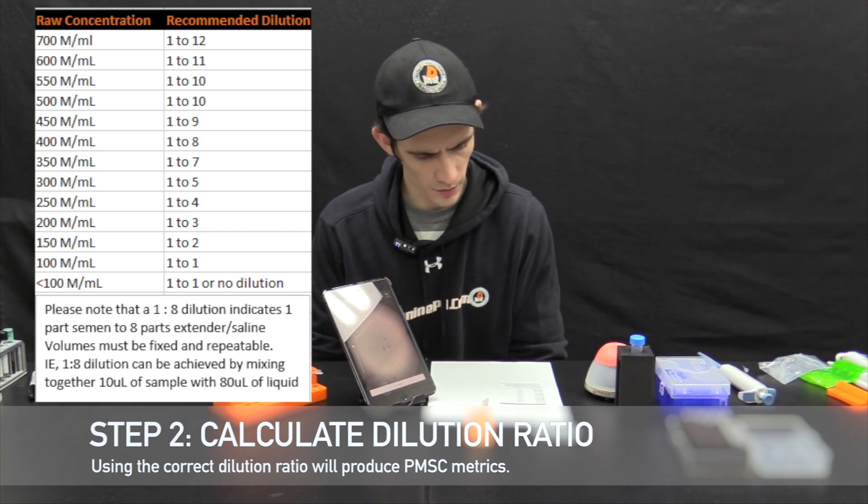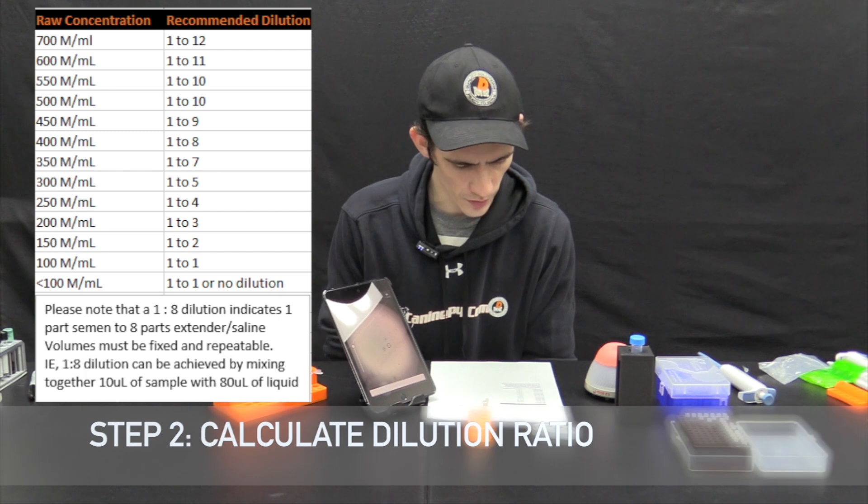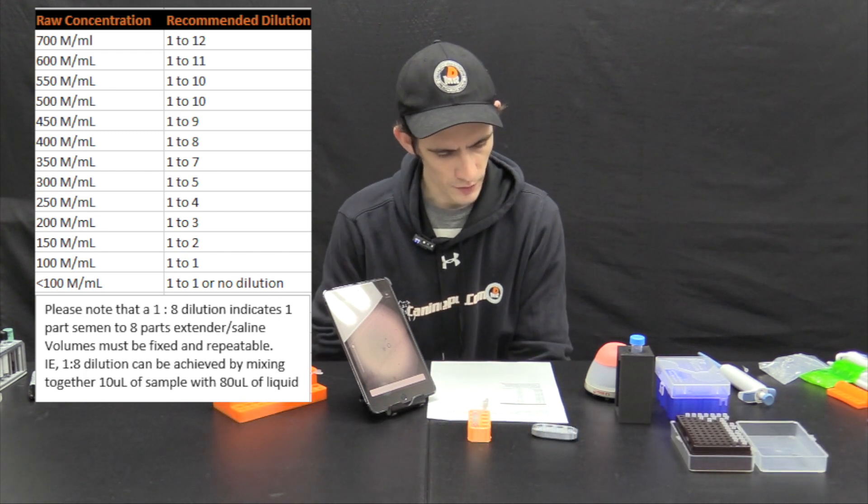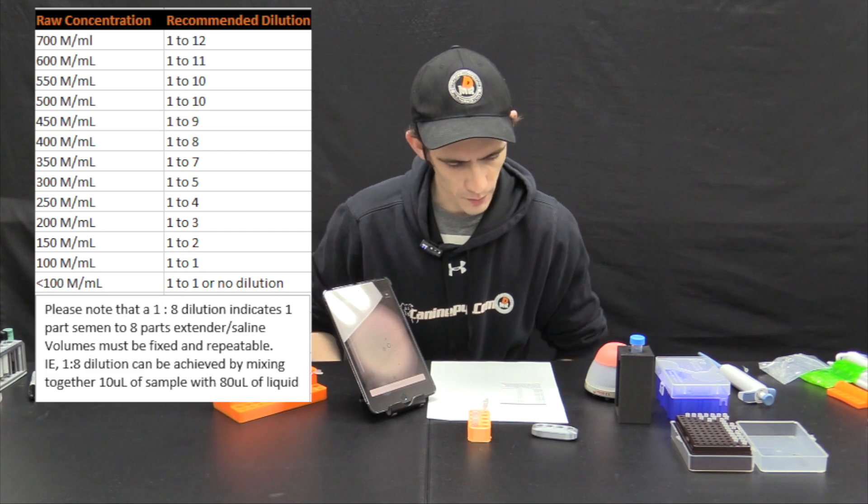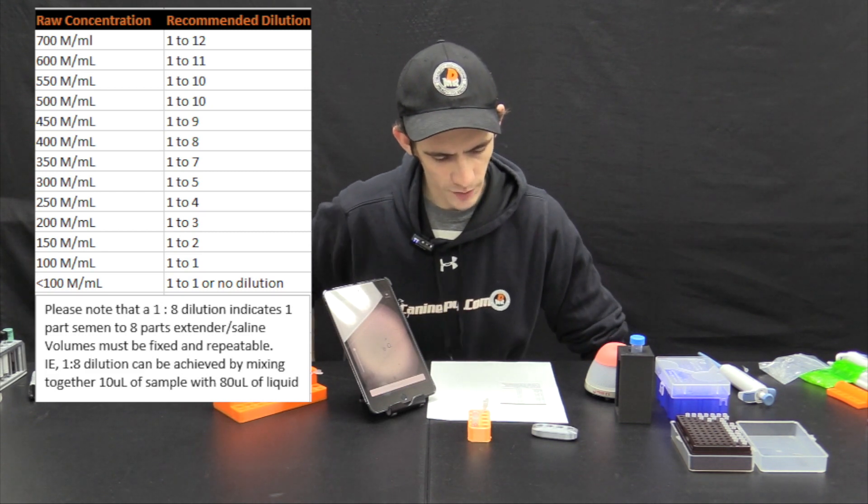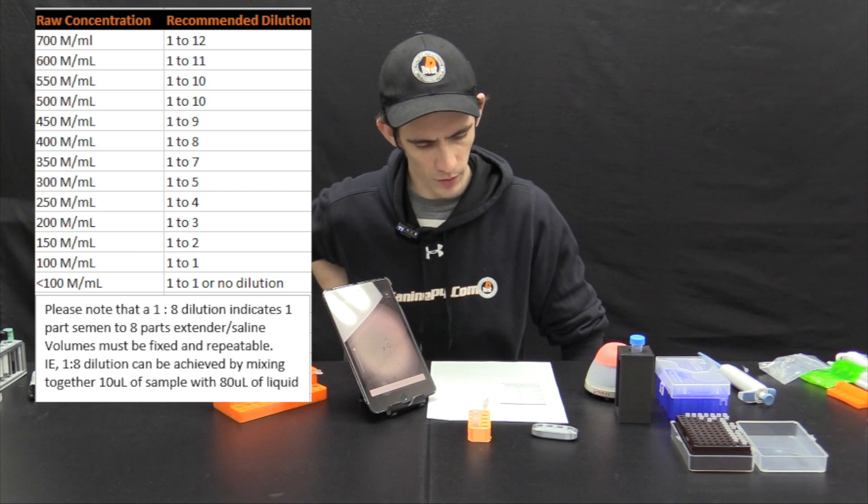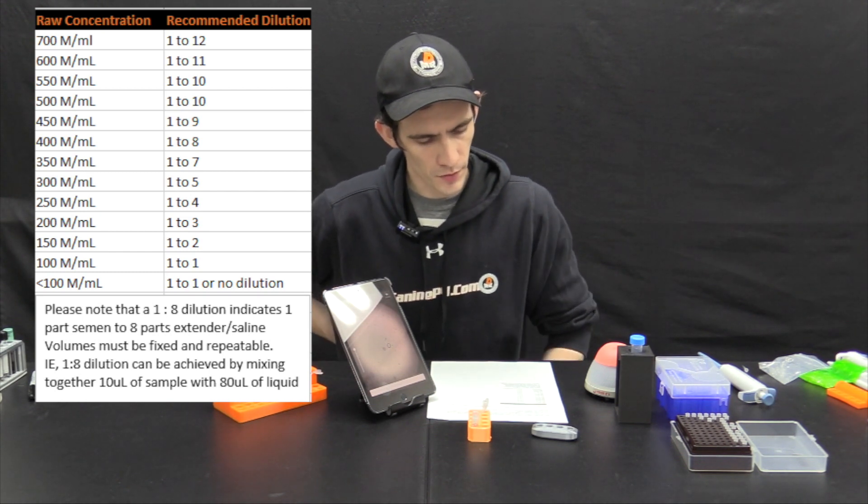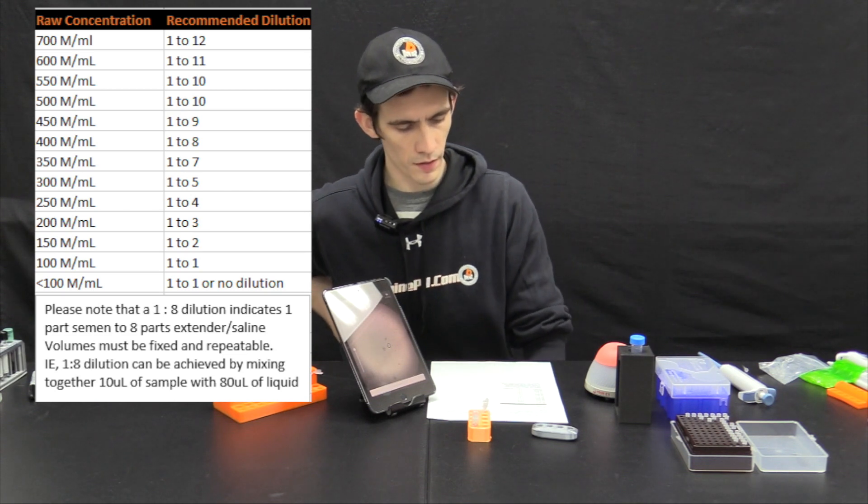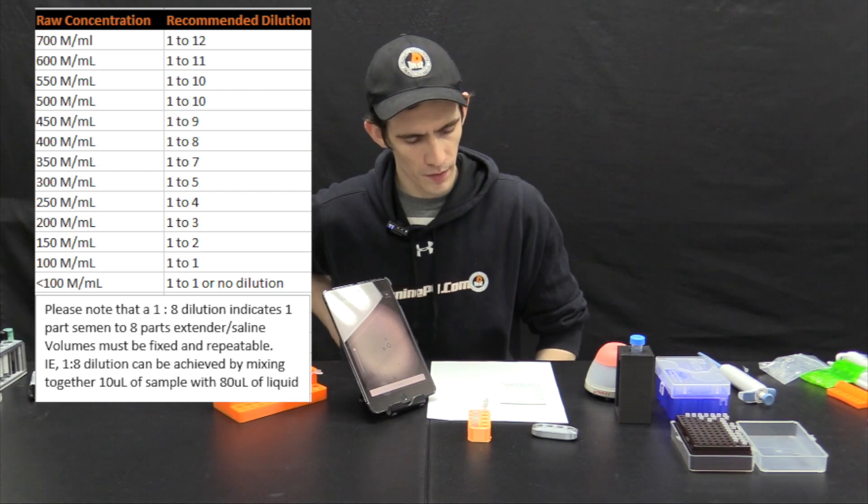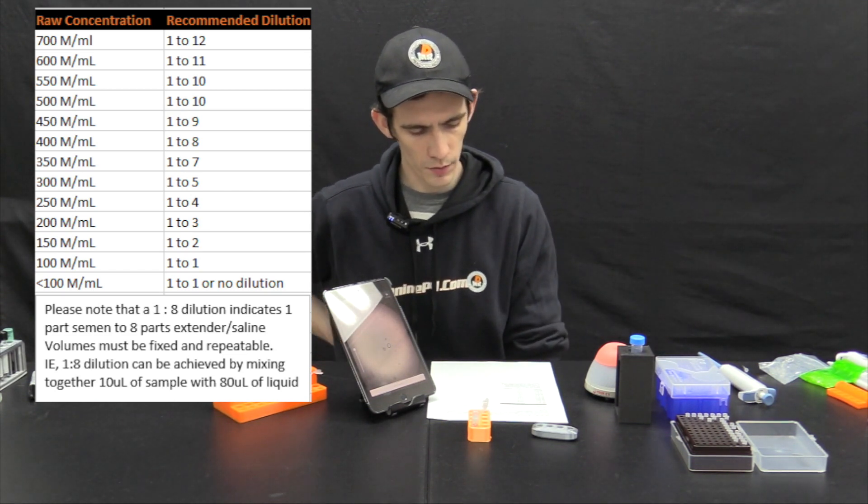So we have a result of 470 and I'm looking here on the chart. At 450 million we're recommended to dilute one part to nine parts or one to nine dilution, and 500 million we're recommended a one to ten. I'm just going to average this up to 500 and we're going to perform a one to ten, one part to ten part ratio or one to ten dilution.